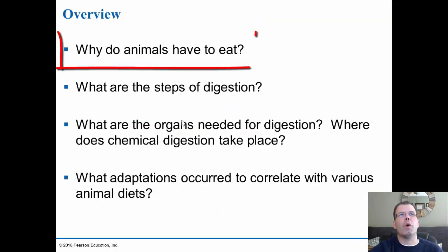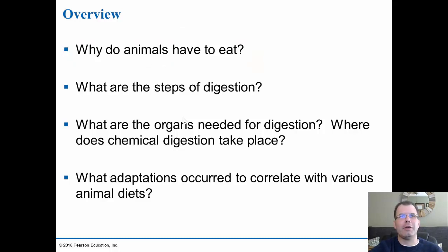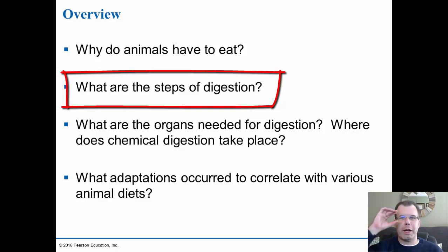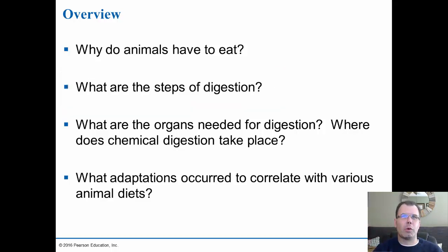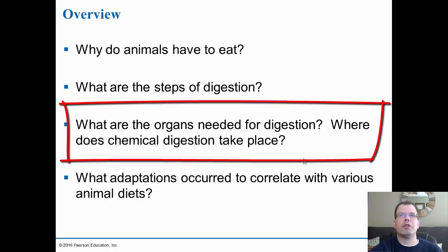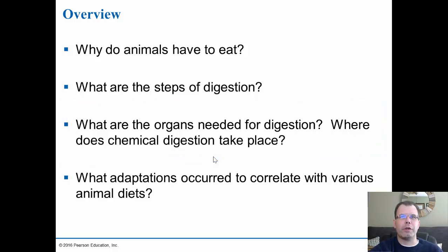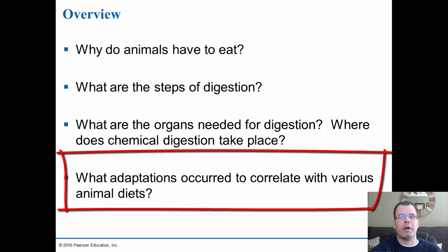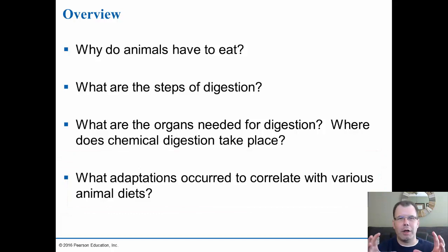First, we'll ask why animals have to eat and look at the nutrients they need to survive. Second, we'll look at the steps of digestion and the organs involved. We'll examine where chemical digestion takes place, the roles of each organ, and finally look at the adaptations correlated with various animal diets — including differences between herbivores and carnivores and other organisms.